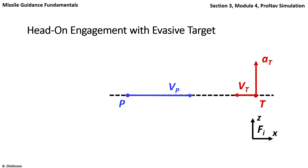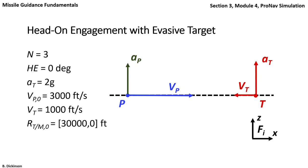But the target, starting from the initial time, accelerates with some AT value. The pursuer, therefore, has to accelerate in order to maintain a collision course. In this engagement, N is set to 3, heading error is initially 0, target acceleration is twice that of gravity, VP is 3 times VT, they're at the same altitude, and their initial separation is 30,000 feet.